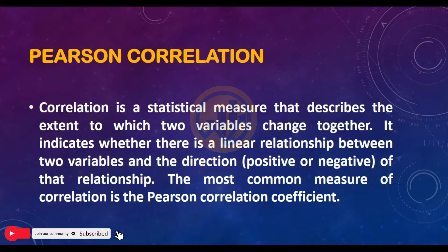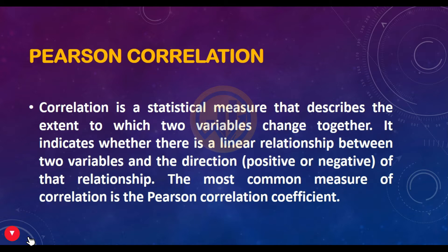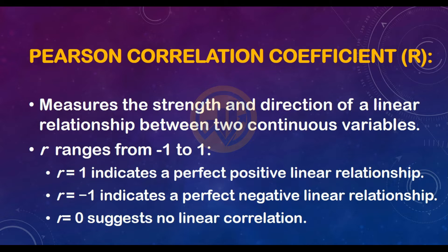What is Pearson correlation? The correlation is a statistical measure that describes the extent to which two variables change together. It indicates whether there is a linear relationship between the two variables and the direction — positive or negative — of the relationship. The most common measure of correlation is the Pearson correlation coefficient, which measures the strength and direction of the linear relationship between two continuous variables.